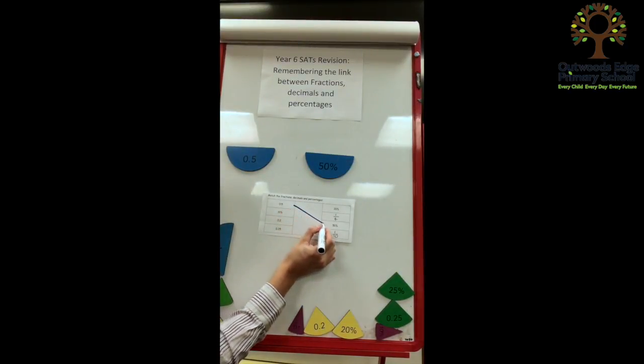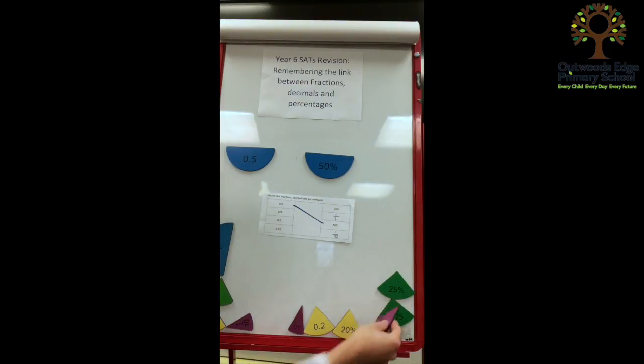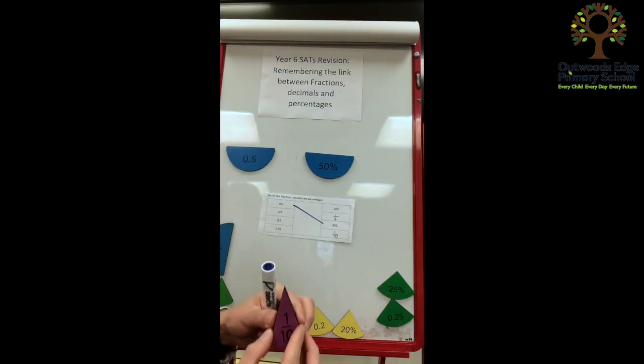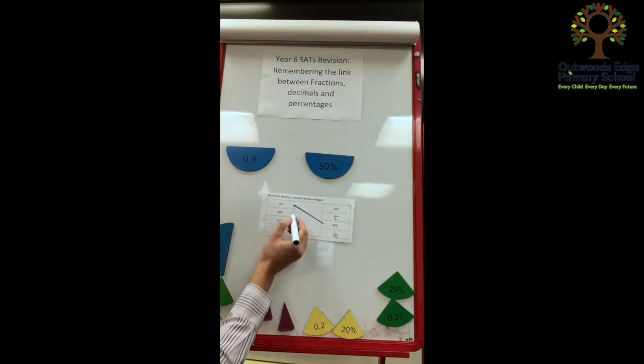Next up, we've got 10%. Now the children should remember that 10% is 0.1 or 1 tenth, and we can match that up. So then we can draw a line connecting 10% to 1 tenth.